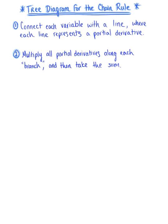There are two steps to creating this tree. Step one: connect each variable with a line, where each line represents a partial derivative. Once you have created that tree, step two: multiply all partial derivatives along a branch — the lines — and then take the sum of all the branches. To establish this tree diagram, let's consider the same function: z equals f of x, y, such that x and y are functions of a parameter t.